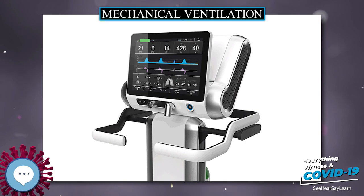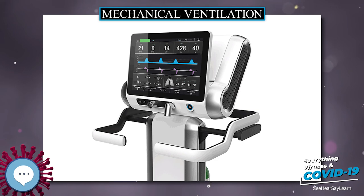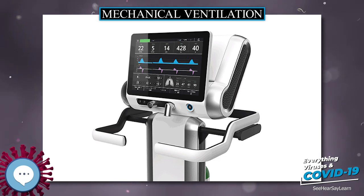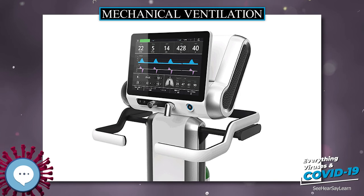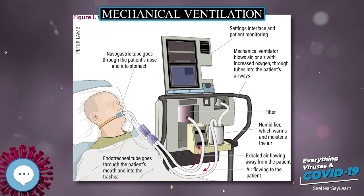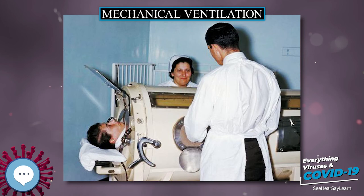It was described in a prospective cohort study of mechanically ventilated patients which found that an RSBI greater than 105 breaths per minute per liter was associated with weaning failure, while an RSBI less than 105 breaths per minute per liter predicted weaning success with a sensitivity of 97%, specificity of 64%, positive predictive value of 78%, and negative predictive value of 95%.